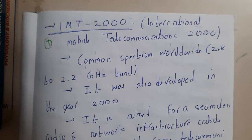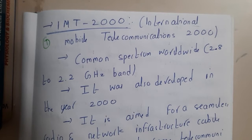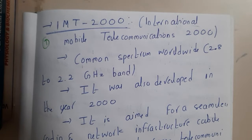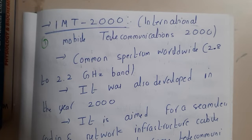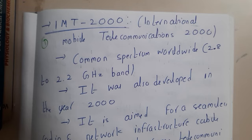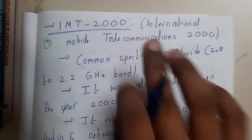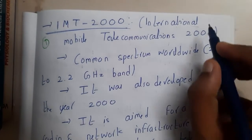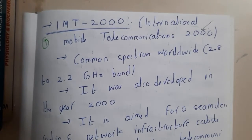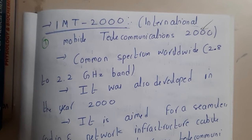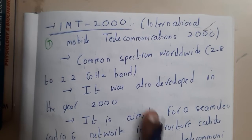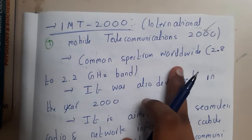Hello guys, we are back with our next lecture. In this lecture, let us go through some introduction about IMT 2000. I did not find any architecture diagram or any clear information, so I am just going through an overview. IMT 2000 stands for International Mobile Telecommunication 2000. The year 2000 is when this was developed.